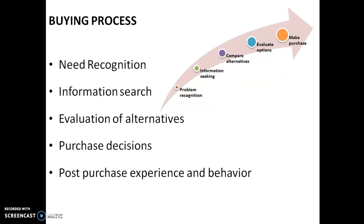The buyer will always try to collect information about the product. Then comes evaluation of alternatives — when focusing on a particular brand, buyers always think about an alternative brand based on prices or discounts. After evaluating alternatives, the buyer settles on a particular product and moves to the next step: purchasing the product. After that comes post-purchase experience and behavior. After purchasing, they have an experience — positive or negative — and will share that experience or feedback with the public. These are the buying process steps normally followed by every customer.